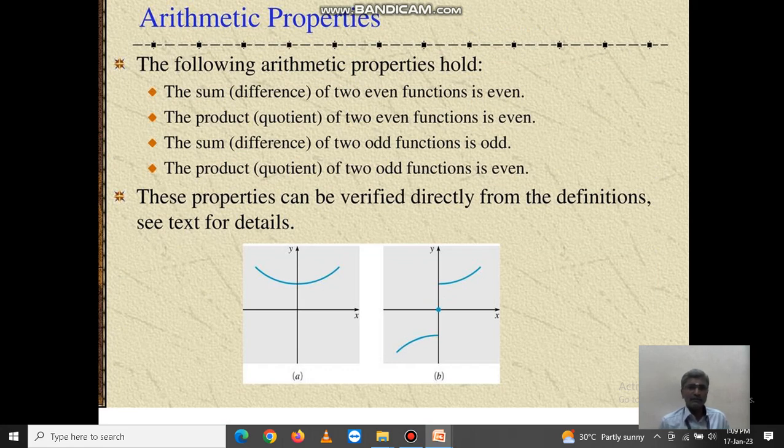Arithmetic properties of odd and even functions: The sum or difference of two even functions is even. The product or quotient of two even functions is even. The sum or difference of two odd functions is even. These four properties are arithmetic properties of odd and even functions.